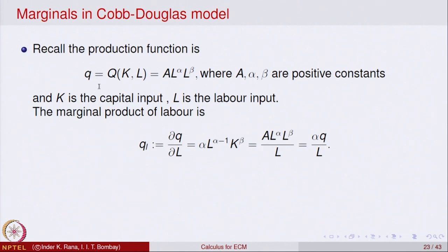Once we differentiate Q with respect to L, the partial derivative of Q with respect to L gives us: A is a constant, and differentiating L^α brings down α, so we get A · α · L^(α−1) · K^β. Multiplying numerator and denominator by L gives α · L^α · K^β / L, which equals α · Q / L. So the marginal with respect to L can be written as α·Q divided by L.